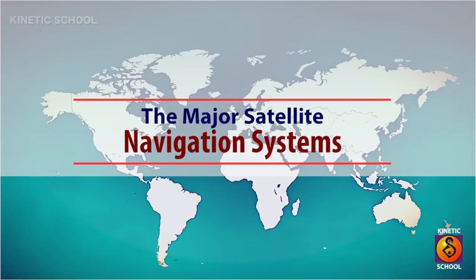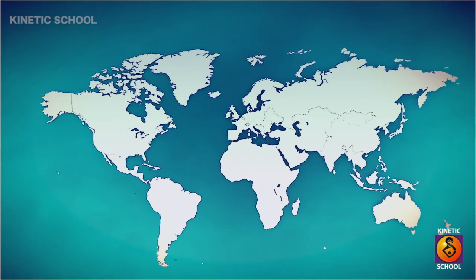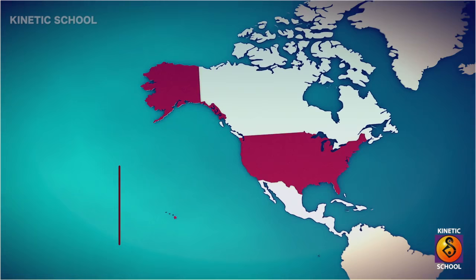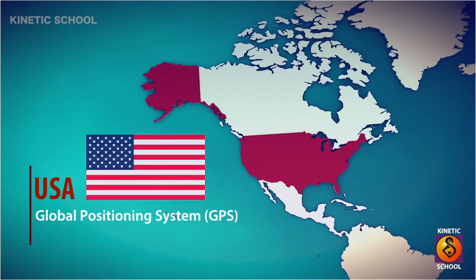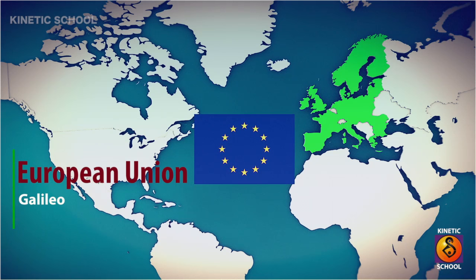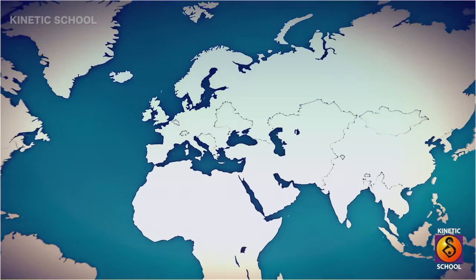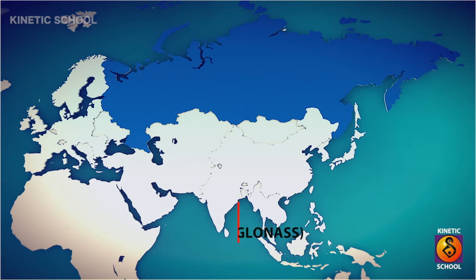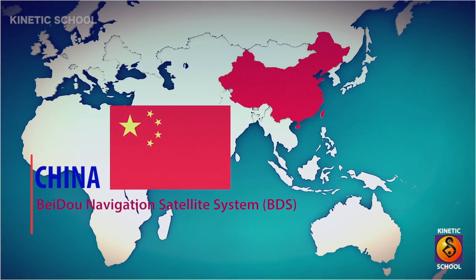The navigation satellite system with global coverage is called the Global Navigation Satellite System, or GNSS. The United States was the first country to introduce satellite technology with the Global Positioning System, or GPS. Another ambitious global navigation satellite system aside from GPS is the Galileo System in Europe. Russia also has its own satellite system called the Russian Global Navigation Satellite System, or GLONASS. In China, there is the Beidou Navigation Satellite System, which will consist of more than 30 satellites.